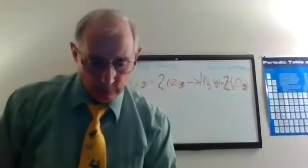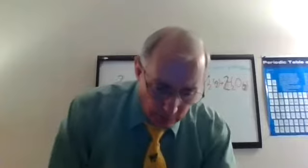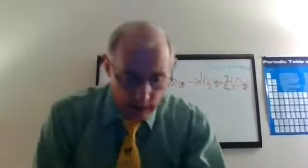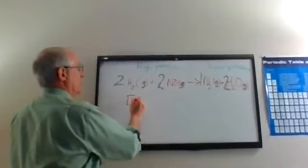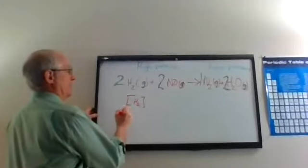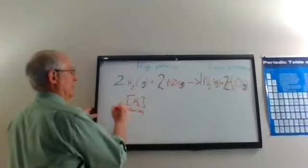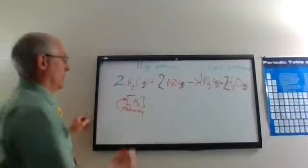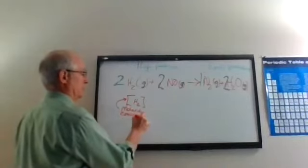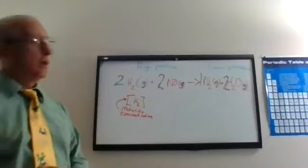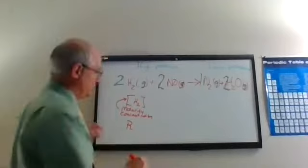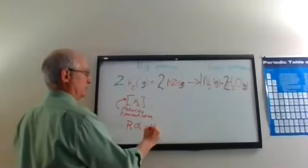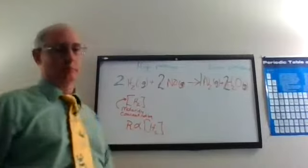Take a look on page 540. If R represents the reaction rate, and this right here represents the molarity, the brackets represent molarity or concentration of that reactant. The rate of the reaction is related to the concentration of the hydrogen gas directly.